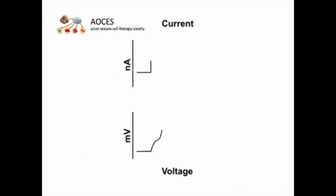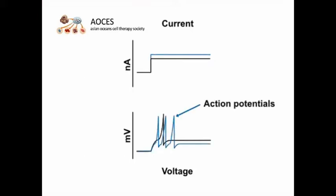Alternatively, scientists can force a specific current through the electrode and record the resulting changes in potential. In this current clamp configuration, action potentials can be recorded.